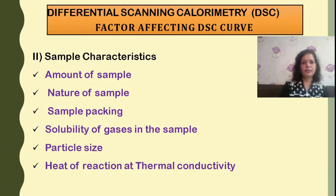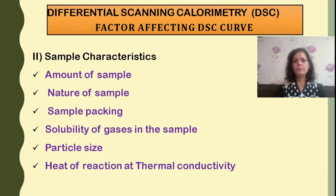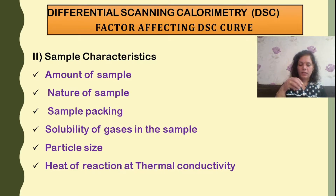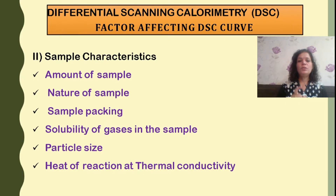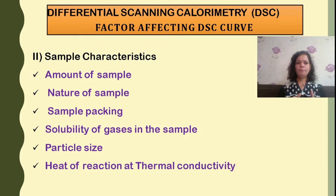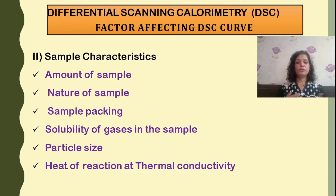Factors affecting the DSC curve with respect to sample characteristics include: the amount of the sample, nature of the sample, sample packing system in the sample holder, solubility of gases released from the sample and whether they re-dissolve into the sample, particle size — whether large, small, or very small — compactness, filling of the sample inside the container, and the heat of reaction or thermal conductivity during the process.